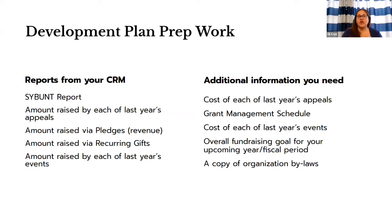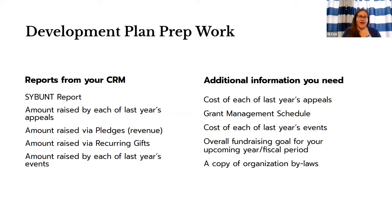You're also going to want a list of what was raised by all of your appeals last year, and you'll want to know what was raised with your pledges. If someone pledged $1,000 but only paid $500, you need to know both portions — what's still due and what actually came in. Same with recurring gifts: you'll want to know who has an active recurring gift, who is actively paying, how much you're anticipating getting this year, and how much you raised last year.